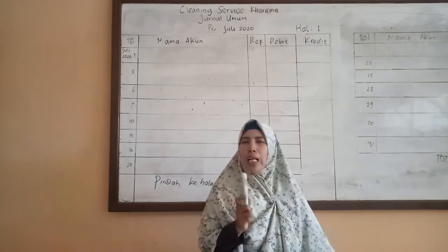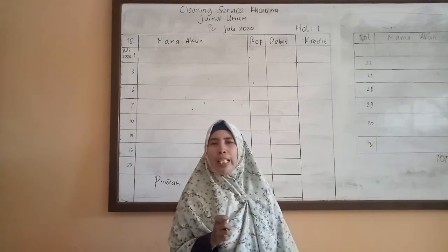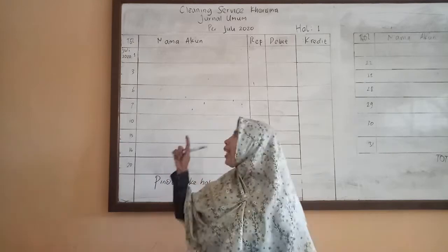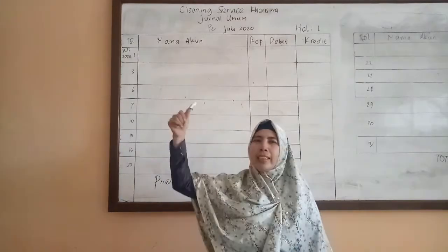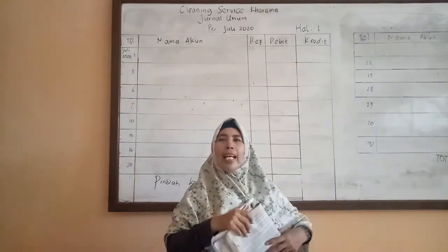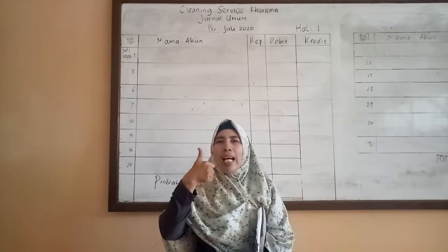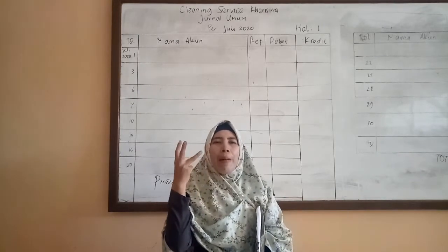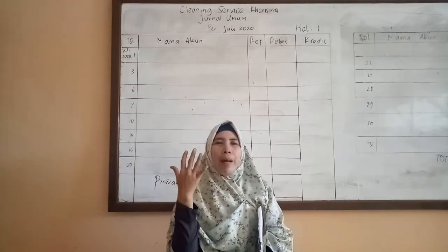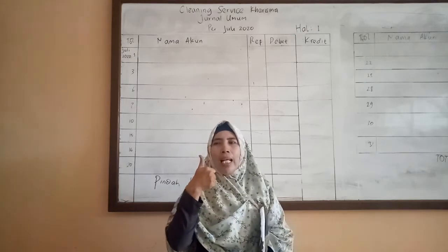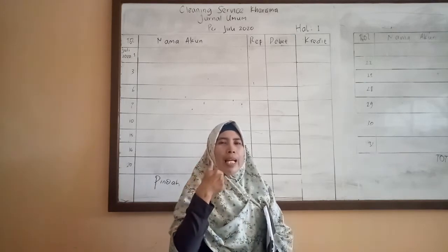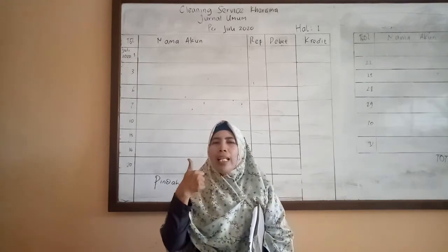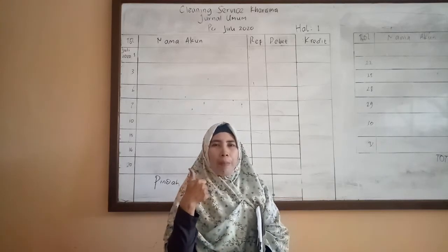Sebelum masuk pada jurnal umum, komponen yang ada di dalam nama akun ini terdiri dari kelompok harta, utang, modal, pendapatan, dan beban. Kelompok harta terbagi menjadi dua kelompok, yaitu aktiva lancar dan aktiva tetap.